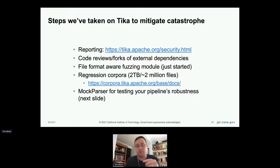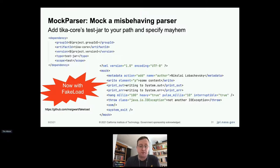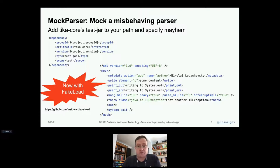That file collection is also used by PDFBox and Poi. We also have a mock parser with fake load so that if you load the Tika test jar on your class path, you can send an XML file that will say 'throw an OOM,' and the parser will throw an OOM. This is really useful to test whether your pipeline is robust against OOM, system exits, crashes, and other awful things. Obviously you do not want the test jar on the class path in production, but for testing, this is a useful method of identifying how well your pipeline can handle problematic files.